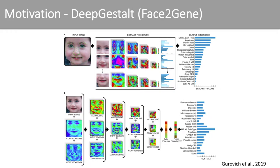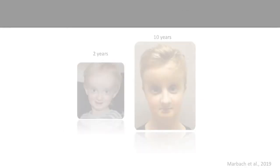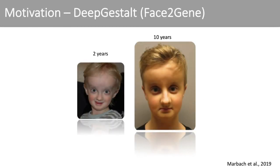Most of you are already familiar with Face2Gene, which is an application with artificial intelligence that helps to detect syndromic phenotypes in facial photos. The deep convolutional neural network within Face2Gene is called Deepgestalt and has been described by Grubich et al. in Nature Medicine in 2019. It supports roughly 300 different disorders. However, since there are probably more than 2,000 distinct phenotypes, Face2Gene cannot yet support the differential diagnostics in any patient.